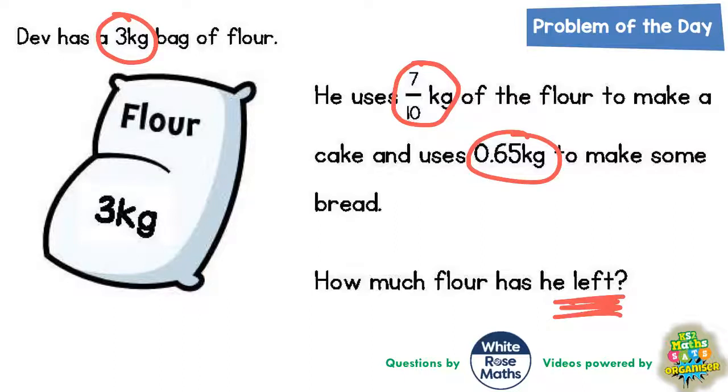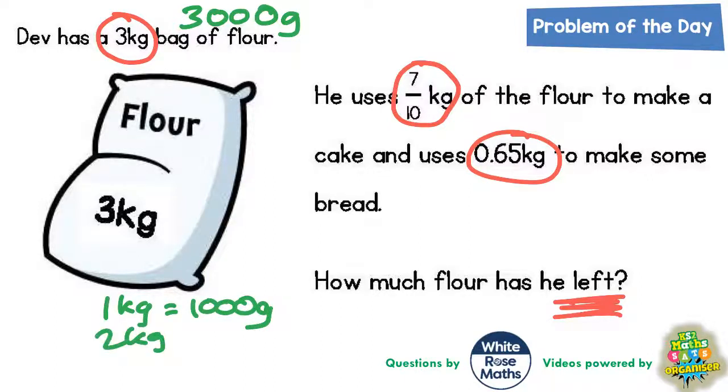So 3kg is actually 3,000g, because remember 1kg is 1,000g, so 2kg is 2,000g, so 3kg which is what we've got here is 3,000g.